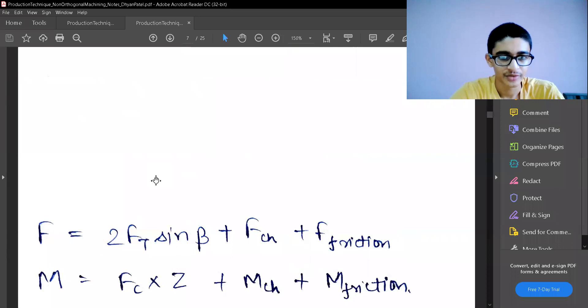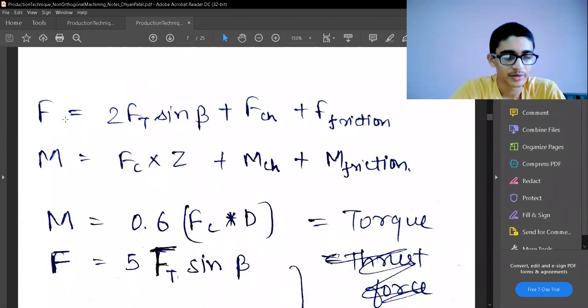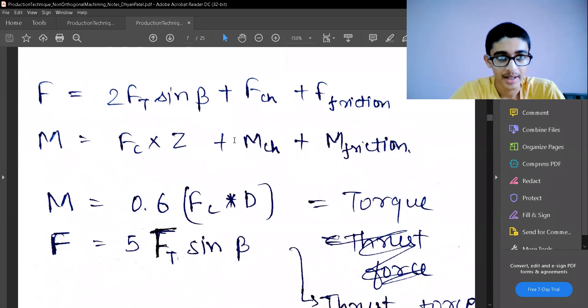Instead of taking varying values of r, we can take an assumed average value of r also. The total force F is given by 2 ft sin beta plus f ch plus f friction. And M is given by f c into z, that z will be the distance which is given, and M ch plus M friction. These are the moments, this is the force equation, this is the moment equation.